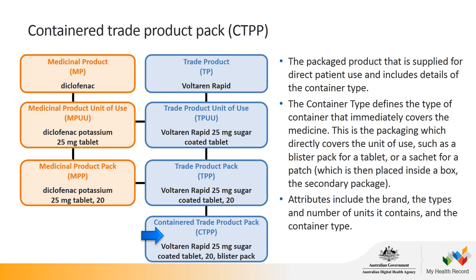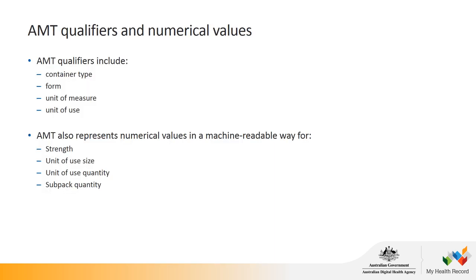Apart from medicinal substance and products, the AMT also includes qualifier concepts that help to define them. This includes qualifiers describing container type (e.g., vial or blister pack), dose forms such as injection or tablet, units of measure such as milligram or gram, and units of use such as tablet. It also includes numerical values that can be read and used for calculations, such as strength, unit of use size (mass or volume), unit of use quantity (how many in a pack), and sub-pack quantity if the pack contains sub-packs.